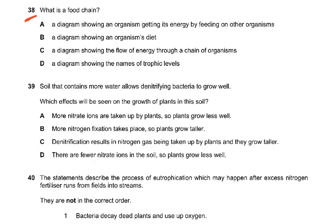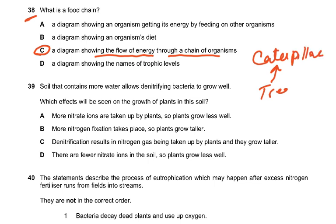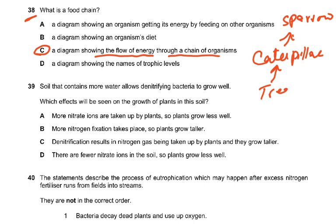Question 38: what is a food chain? The answer is C — a diagram showing the flow of energy through a chain of organisms. For example: tree → caterpillar → sparrow. Note that you must use specific organism names — you cannot just write 'bird'; you must say sparrow or parrot. The food chain shows the flow of energy through a chain of organisms.